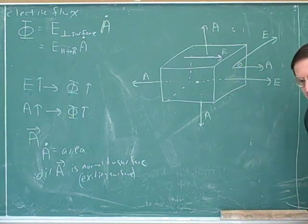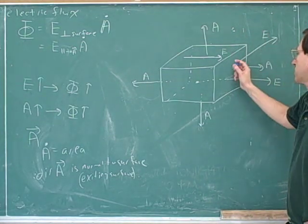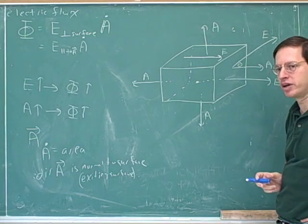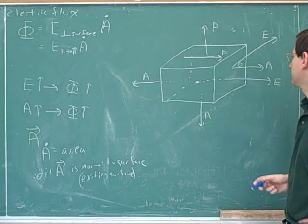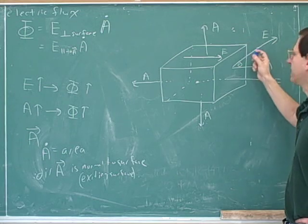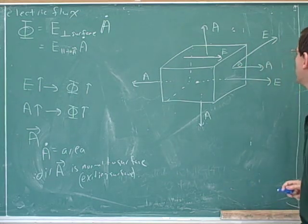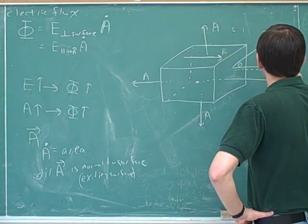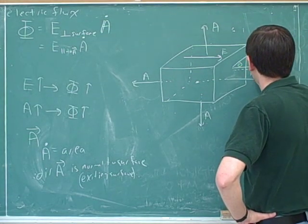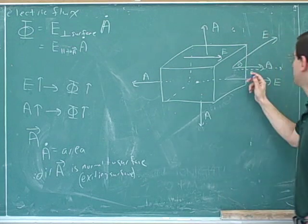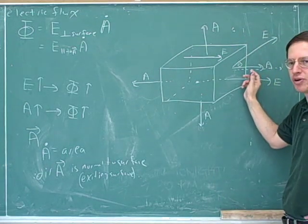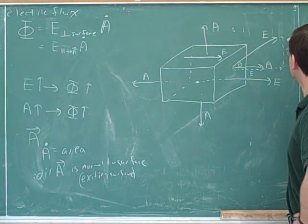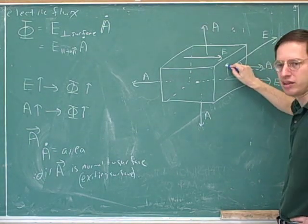Suppose we had an electric field vector that looks like this. This electric field vector has one component that's parallel to the surface and one component that's perpendicular to the surface, because it has both horizontal and vertical components. The component that's parallel to the surface is the one we drop — we don't want to pay attention to it because it's just moving along the surface.